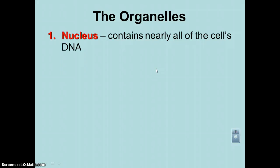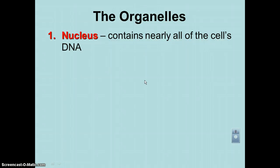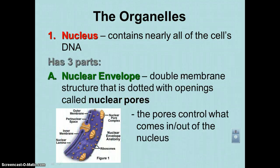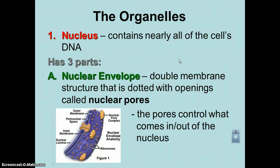Let's look at the structure of the nucleus. Number one: the nucleus contains nearly all of the cell's DNA. The other places where you would find DNA would be in the mitochondria, or also in a chloroplast if you were a plant cell. Now, the nucleus has three parts. The first part is the nuclear envelope, sometimes referred to as the nuclear membrane. It is dotted with little holes called nuclear pores, which are basically proteins that have formed a channel. The nuclear pore acts like a door — during transcription, the mRNA would leave the nucleus through a nuclear pore and head out into the cytoplasm.